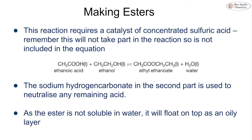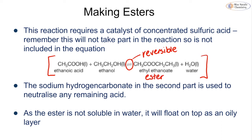The concentrated sulfuric acid catalyst doesn't take part in the reaction — it simply helps move it along, so it's not included in the equation. The equation is: ethanoic acid CH₃COOH (l) + ethanol CH₃CH₂OH (l), with a reversible arrow, forming ethyl ethanoate CH₃COOCH₂CH₃ (l). We'll discuss where that name comes from shortly.